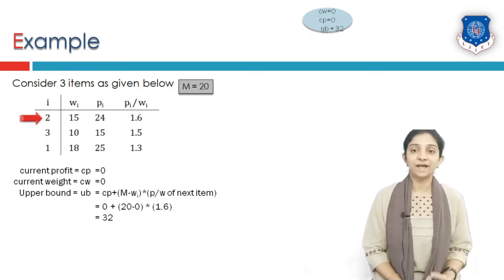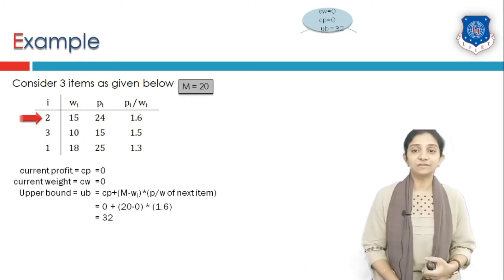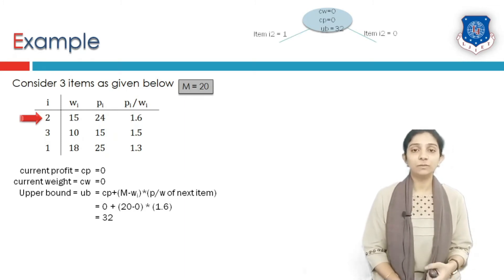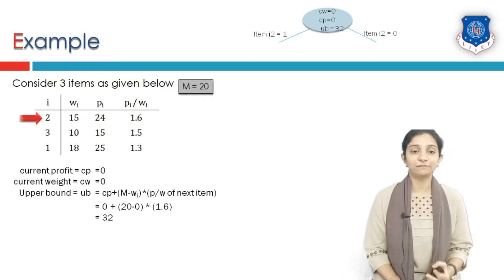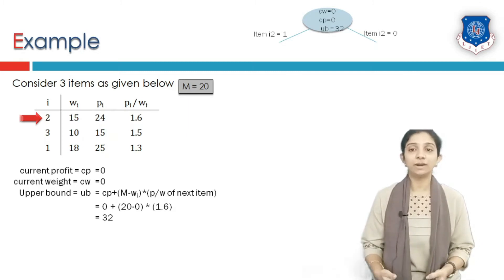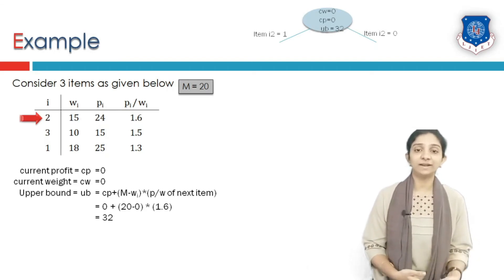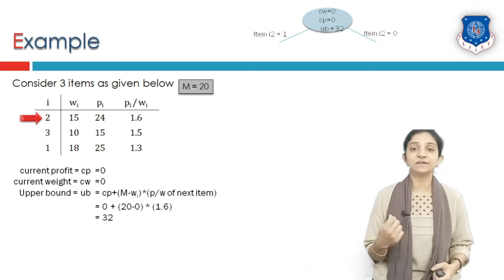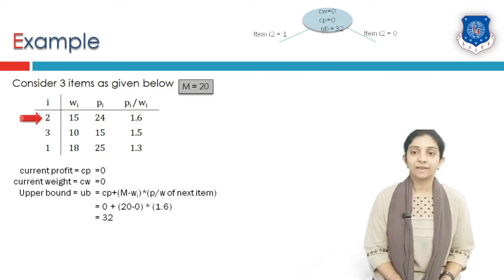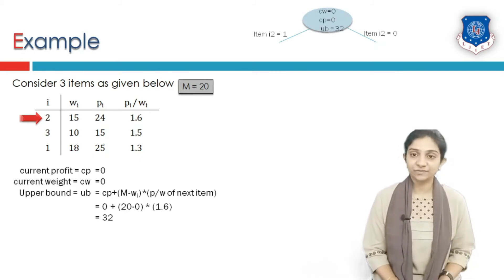We expand the tree starting with item 2, which is the first item in our sorted list. This item can either be placed inside the knapsack (branch = 1) or not placed inside the knapsack (branch = 0). We generate two child nodes for these two branches.